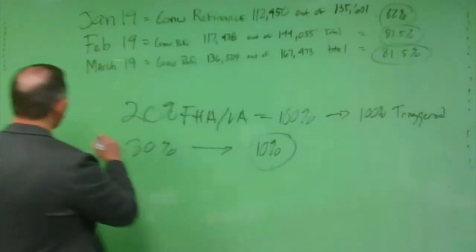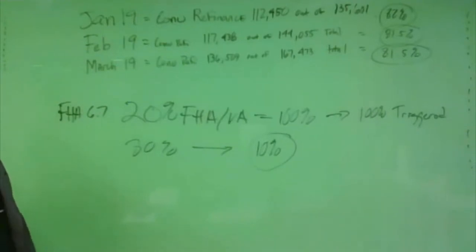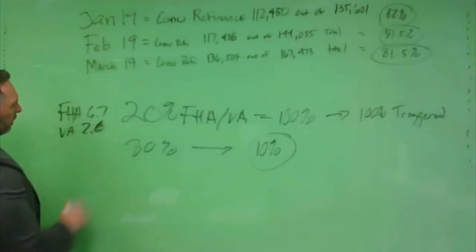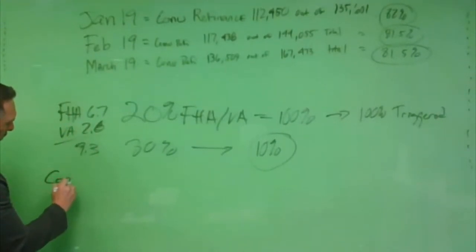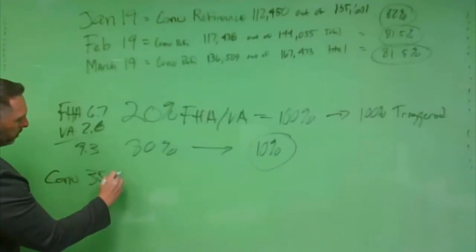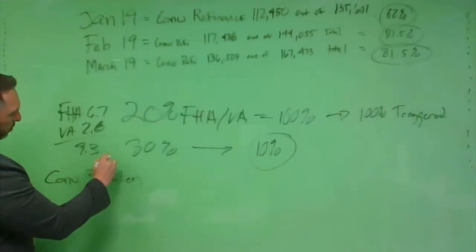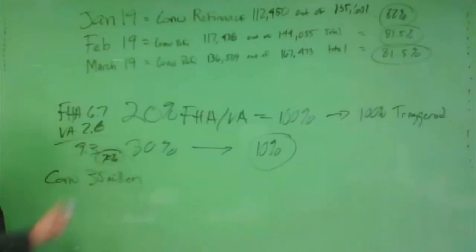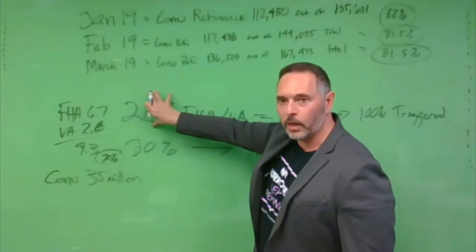The FHA and VA marketplace, FHA total data is 6.7 million records. VA total records is 2.6 million. So that's a total of 9.3 million potential customers total. And that's not even talking about what's marketable there. The conventional space, 35 million. So you're talking about something that is 70% smaller marketplace that only accounts for 20% of the transactions.